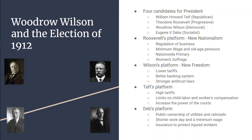Wilson's program was called New Freedom. He wanted to lower tariffs, limit power in Washington, return competition to small and medium-sized businesses, and he wanted stronger antitrust laws and better banking.